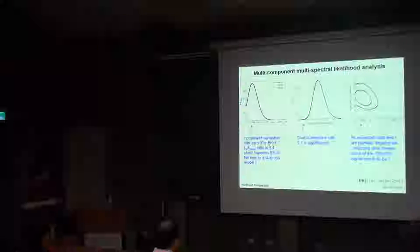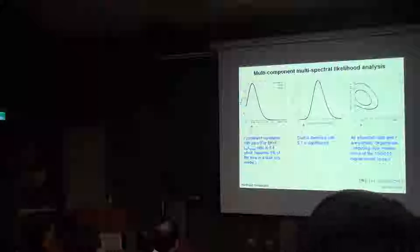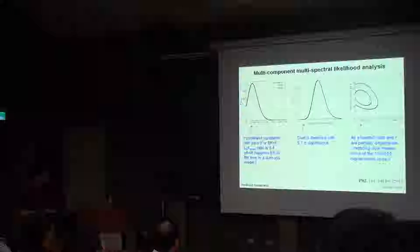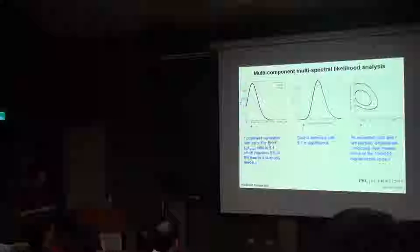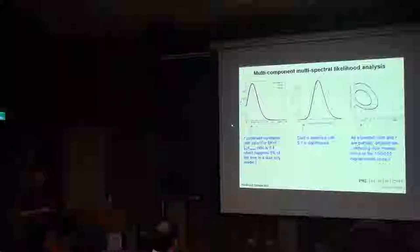This is the one-dimensional likelihood curve that describes r, the tensor-to-scalar ratio. Zero means no gravitational waves. Without any subtraction, the BICEP2 likelihood curve peaks around here. With subtraction, the BICEP2 curve moves down a little bit — not dramatically.